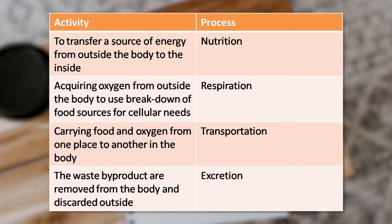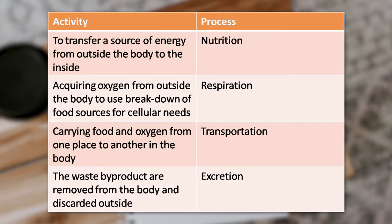They may give examples of respiration — acquiring oxygen from outside the body to break down food as per cellular needs. Then they may talk about transportation, meaning carrying food and oxygen from one place to another, or excretion, meaning waste by-products are removed from the body. They can talk about many processes and enlist the activities involved.